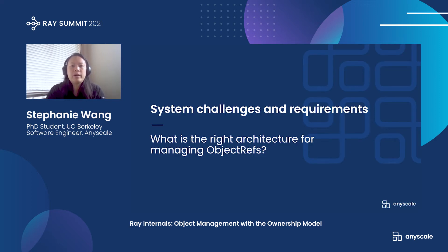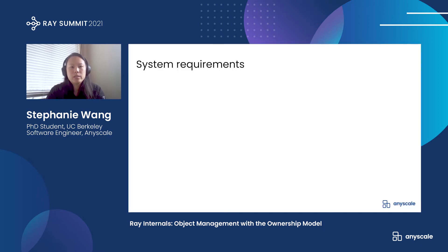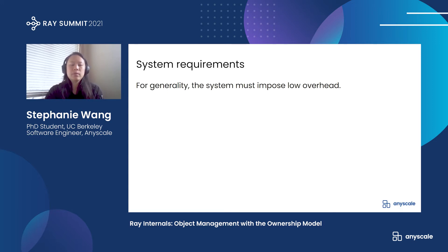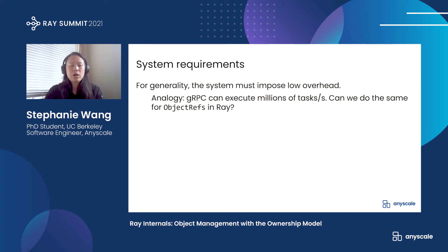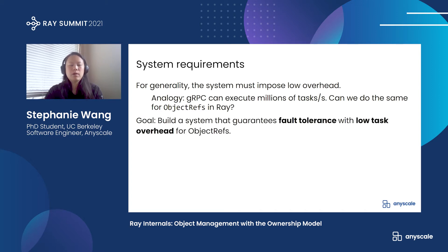Object refs make it possible for Ray to provide high performance for the application, but there's a lot more to it than that. Let's take a look at the requirements and challenges for building a system like Ray. The goal of Ray is to efficiently support applications that dynamically generate many short tasks, which might run in milliseconds, and the reason for that is generality. As an analogy, we can look again to the RPC model. For example, the popular gRPC framework is practical for so many applications because of its low overhead and its ability to execute millions of tasks per second. So the question is whether we can do the same for object refs and how we can still achieve fault tolerance in doing so.